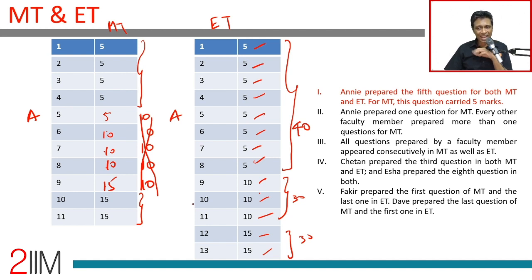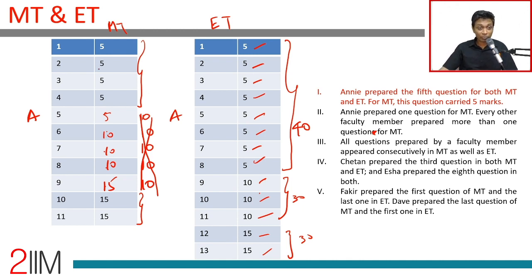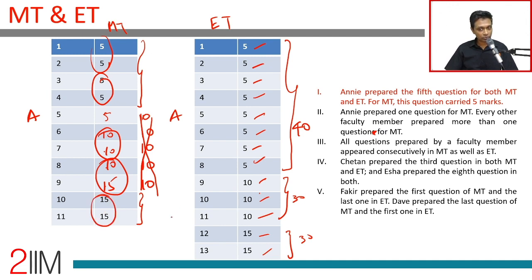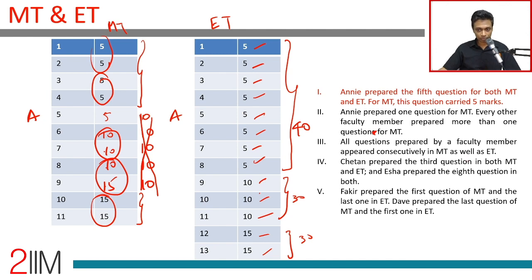Annie prepared one question for MT; every other faculty member prepared more than one. With 11 total questions and six faculty members where Annie has one, the others must each have two. All questions by a faculty member appear consecutively, so the questions pair up into consecutive blocks of two, with Annie's single question fitting in the middle.